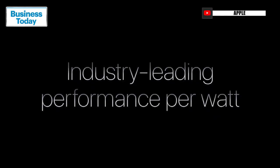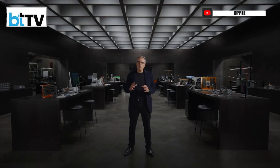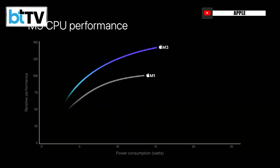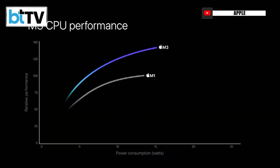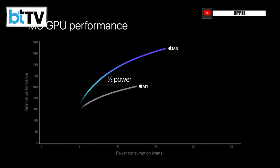We've added these architecture and performance improvements while maintaining our industry-leading performance per watt. Since the M1, this architecture is able to deliver the same multi-threaded CPU performance as M1 with just half the power, and the GPU is able to deliver the same performance as the M1 using nearly half the power as well. These are tremendous gains in performance per watt.